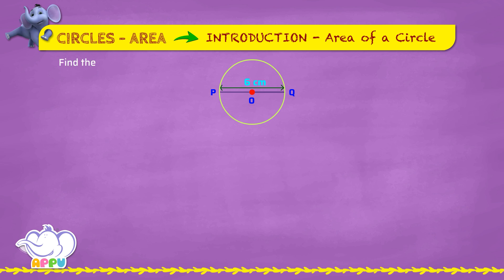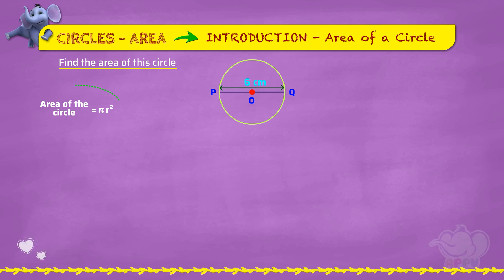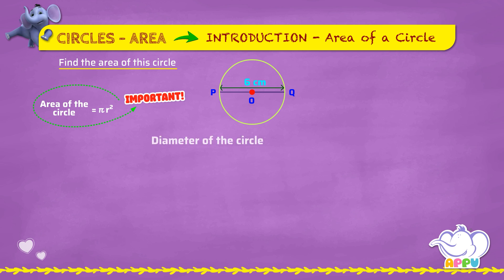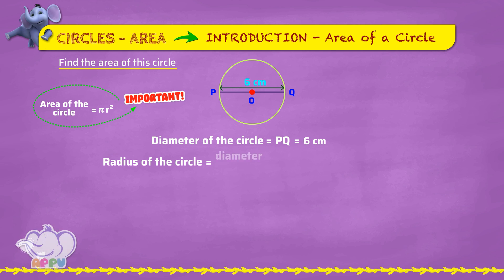Find the area of the circle. Area of the circle equals pi r squared. The diameter of the circle PQ equals six centimeters. Here, the radius of the circle equals half the diameter: OQ equals 6 divided by 2, which equals three centimeters.